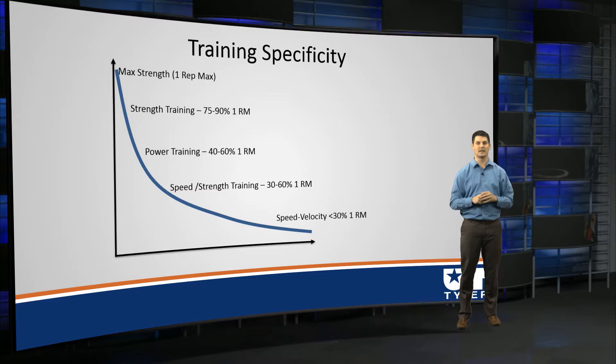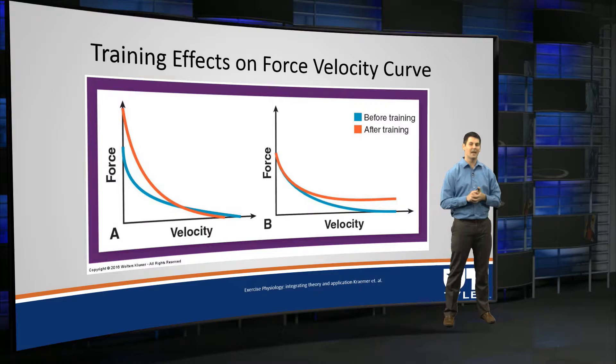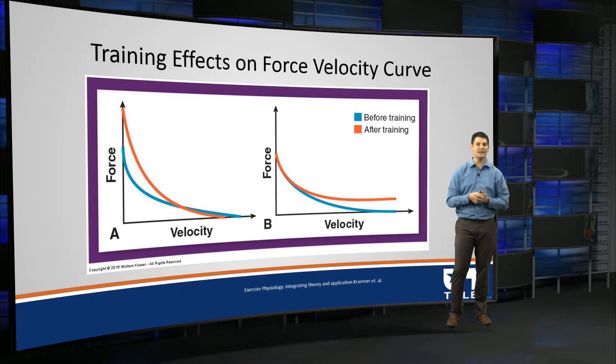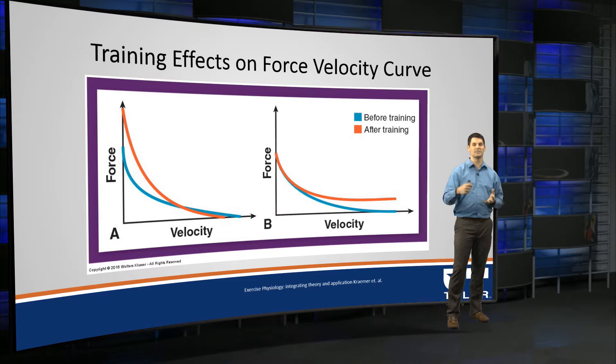Here are some effects of training on the force-velocity curve. Before training is shown in light blue and after training in red. On the left-hand side, this is a classic strength training protocol trying to increase maximal strength. You'll see that the red line — the after-training — is much, much higher than the before-training in maximal isometric force. This protocol would be working probably at 75 to 90 percent of the force-velocity curve.